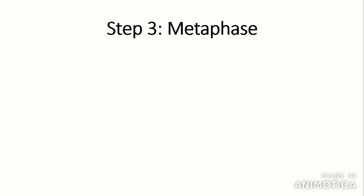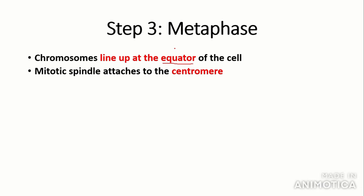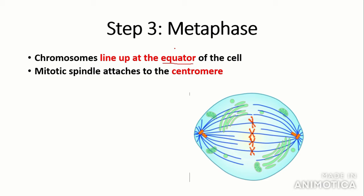The next stage is metaphase. Metaphase is when chromosomes line up at the equator of the cell. The key term here is equator. At A-level you can't put the middle of the cell. You have to put equator to get marks in the exam. Also, the mitotic spindle attaches to the centromere as the spindle pulls apart the chromatids at the centromere. As you can see this is demonstrated by this diagram. As you can see, the chromosomes are lined up at the middle with the mitotic spindles attached to the centromere.